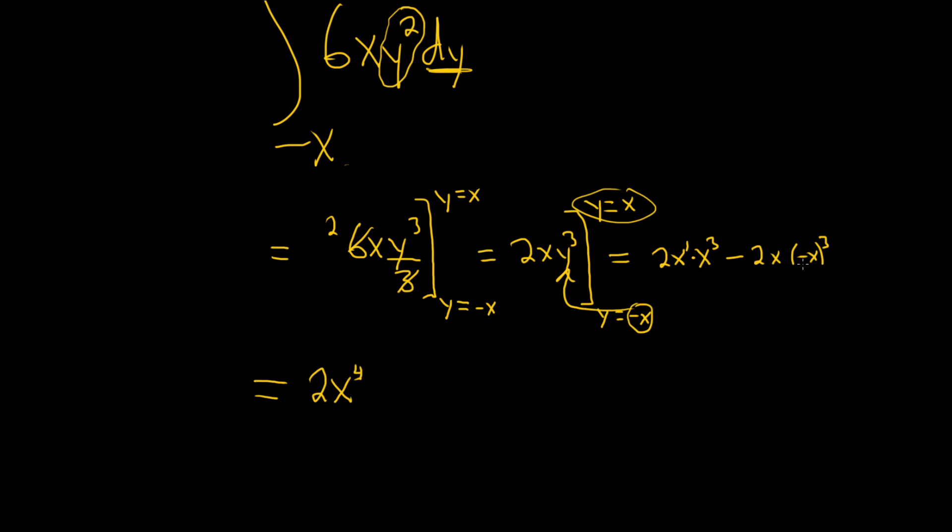And then here, negative x cubed will become a negative, will become this, right? Because the negative will come out, because it's odd. But there's a negative here already, so it'll become plus 2x to the 4.